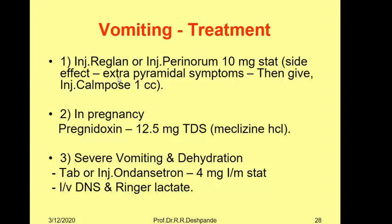In pregnancy, instead of Perinorm, prescribe Tablet Pregnidoxin 12.5 mg three times a day — a brand name containing meclizine hydrochloride. If there is severe vomiting where the patient cannot take oral medicine, or severe dehydration, use the latest generation anti-emetic: Tablet or Injection Ondansetron (M-Set) 4 mg intramuscular stat. To control dehydration, give DNS and Ringer's Lactate intravenously.